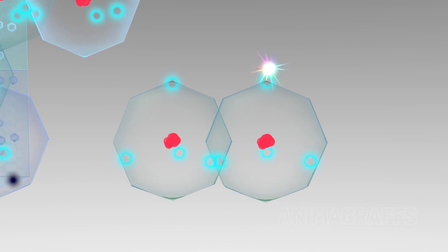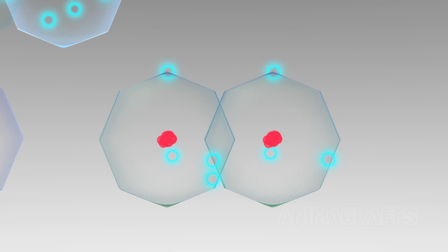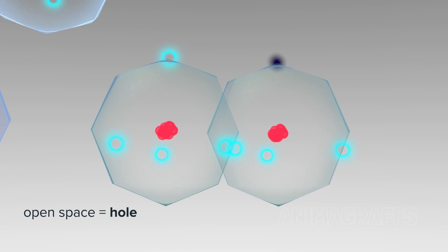When an electron leaves an open spot, other electrons naturally fill it in sequence. For our purposes, it's convenient to track the open space, or hole, as it moves.